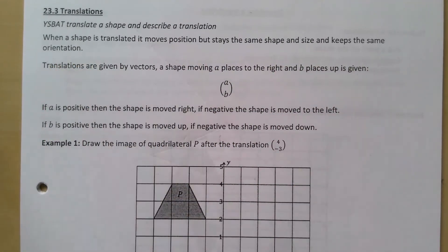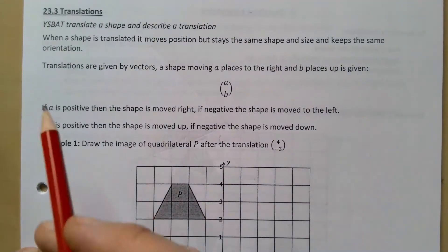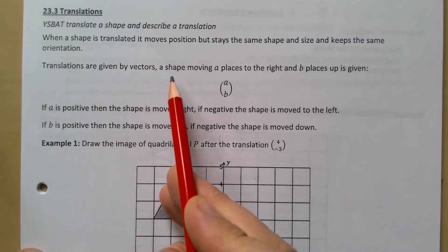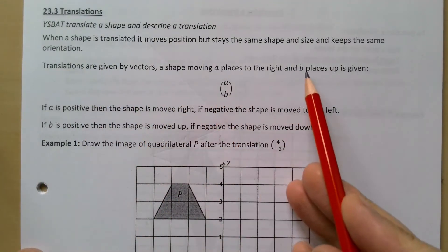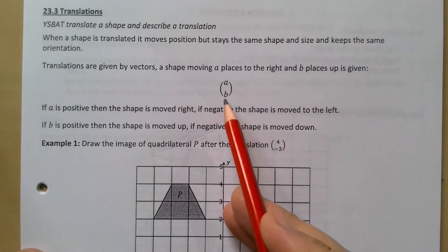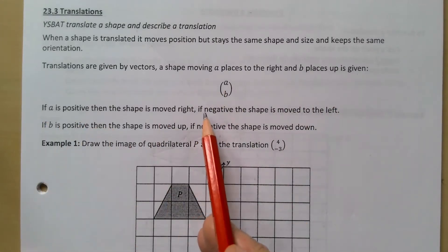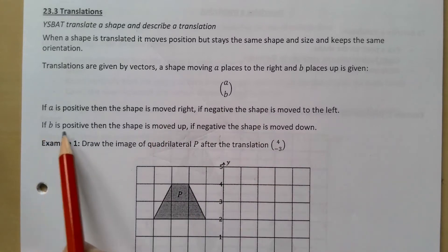It doesn't get twisted around like in rotation. Translations are given by vectors - a shape moving a places to the right and b places up is given by (a, b). If a is positive then the shape is moved right, if negative the shape has moved left. If b is positive the shape is moved up, negative moved down.